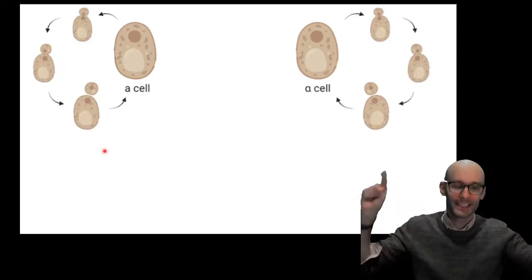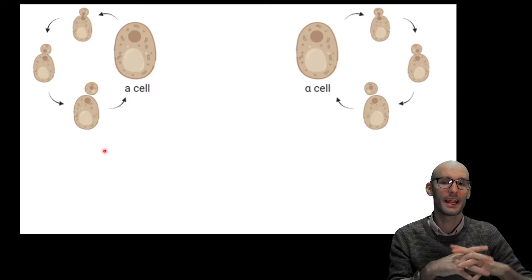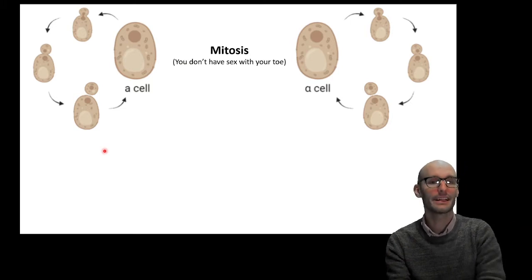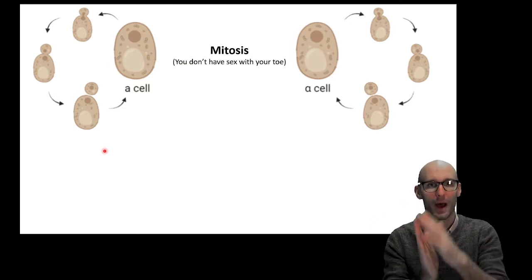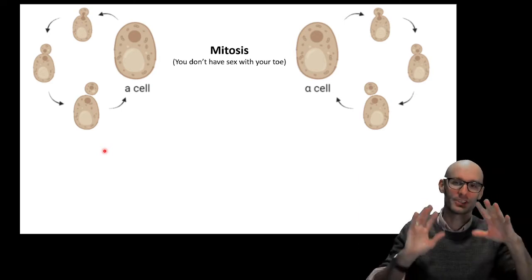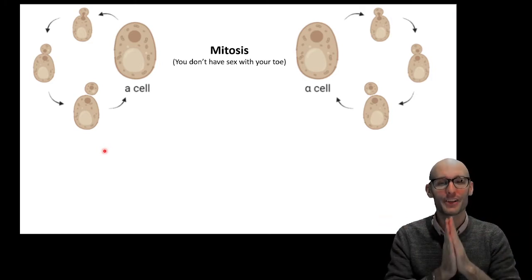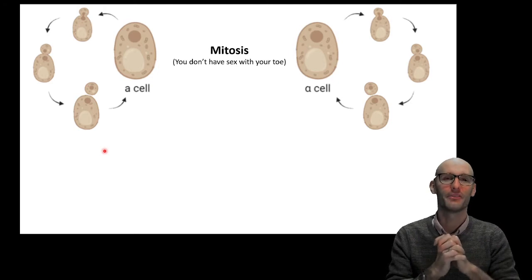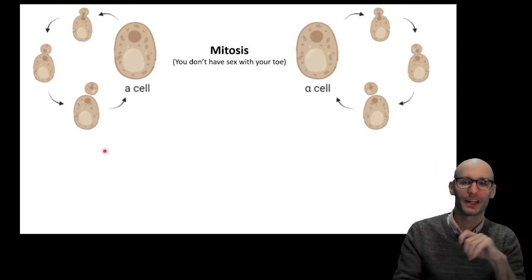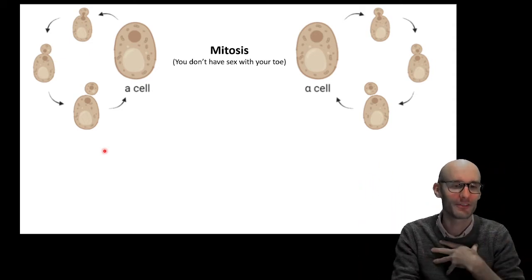Now, these guys can undergo asexual cell division. So they just essentially form a bud, and then they bud off after duplicating their DNA, and so they are able to undergo fission to create two cells that are both haploid. So this is technically mitosis, which is quite interesting, because it involves haploid cells, which we typically think of as gametes, but they're undergoing asexual division. So that's mitosis. You don't have sex with your toe. That's how I remember it. Mitosis has the word toe in it, and you don't have sex with your toe. So if it's not involving sex, it's called mitosis. If it is involving sex, it's called meiosis.